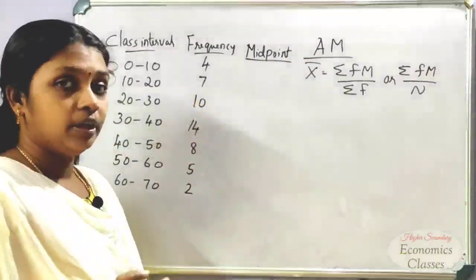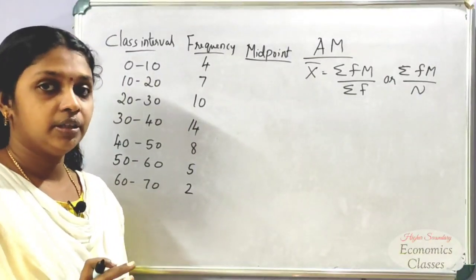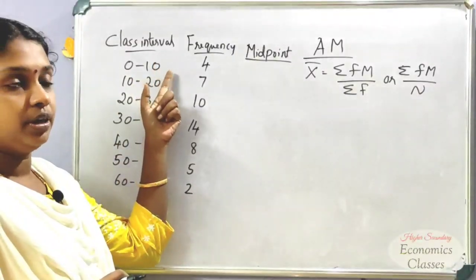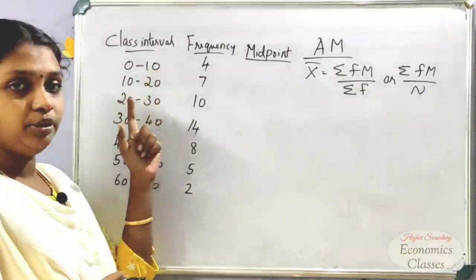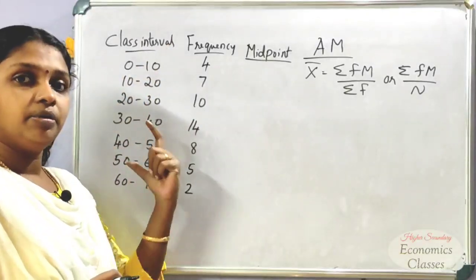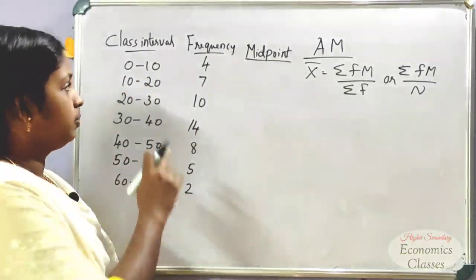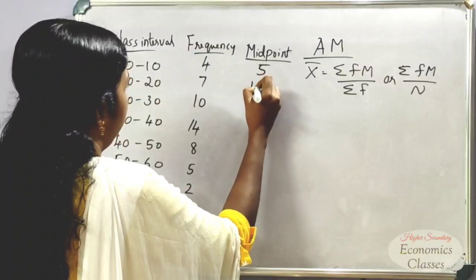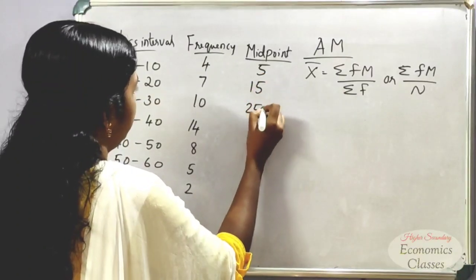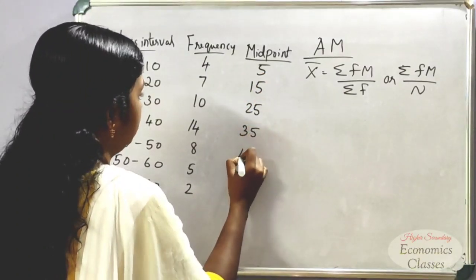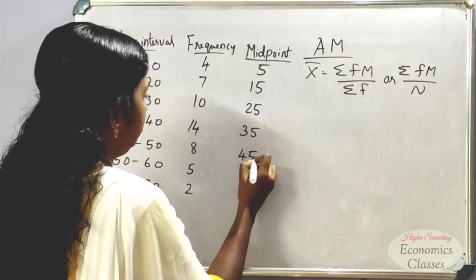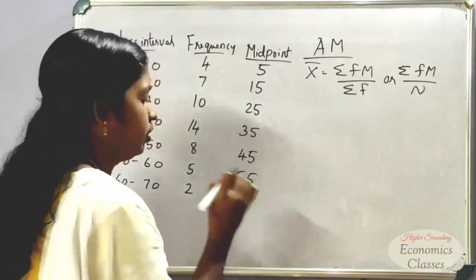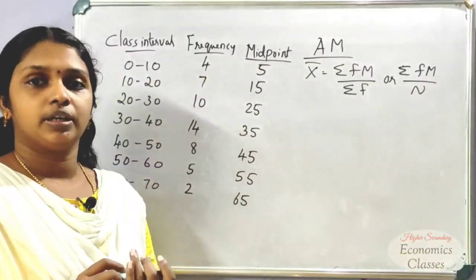How do we find the midpoint? We use: lower limit plus upper limit divided by 2. These are the mid-values of the classes. So the midpoints are 5, 15, 25, 35, 45, 55, and 65.